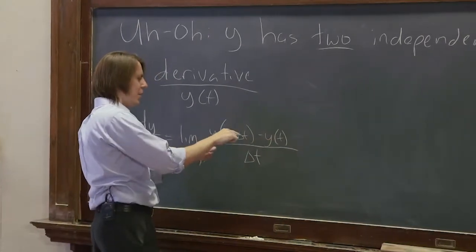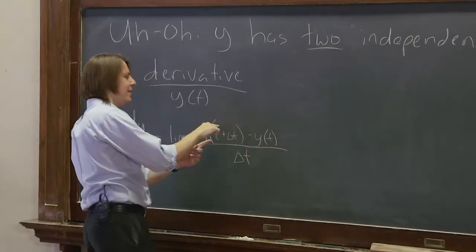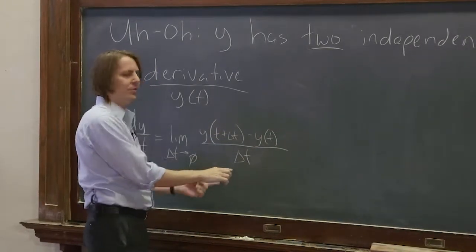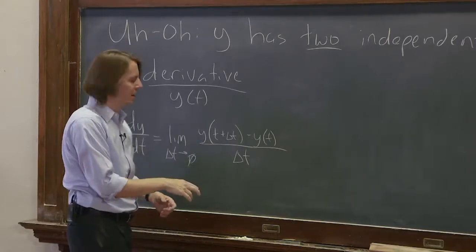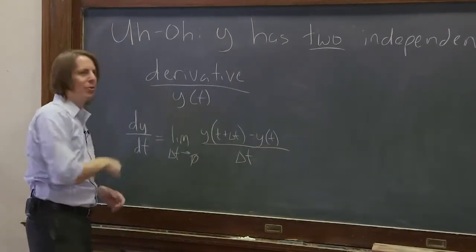This is the rise. This is the y, the height at one point, and the height at a further along point. The difference is the rise, and delta t is the run. It's just the rise over the run. And the limit means that's what it is at one point.